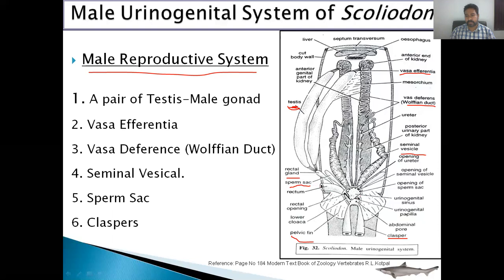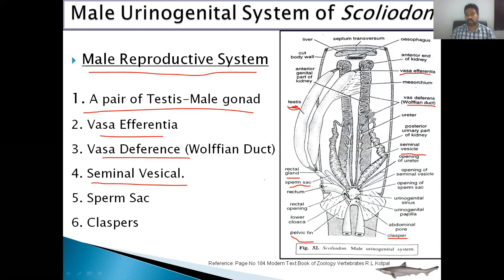So in the male reproductive system of Squalus, there is a pair of testes, which is the male gonad and is called the factory of sperms or spermatozoa. It synthesizes male gametes by meiosis, and the process is called spermatogenesis. After formation, the sperms go to the vas efferentia, then to the vas deferens, then to the seminal vesicle where they are stored. The vas deferens and vas efferentia secrete nutritive fluid for the spermatozoa. The clasper, which is the intromittent organ in the case of Squalus, is used to transfer the male gametes into the cloaca of the female.